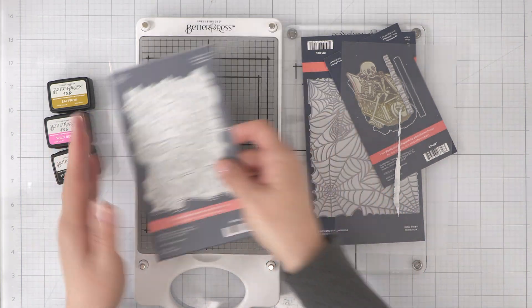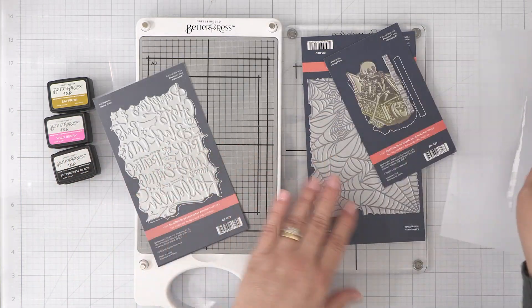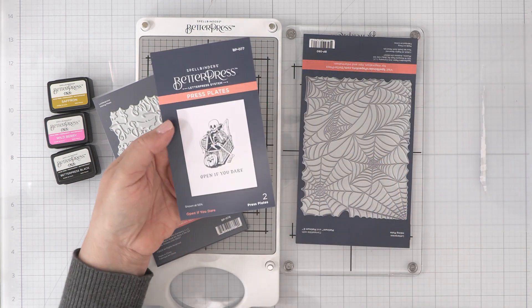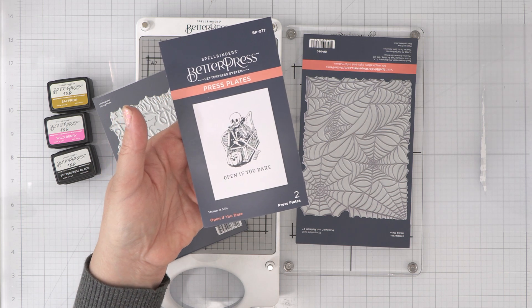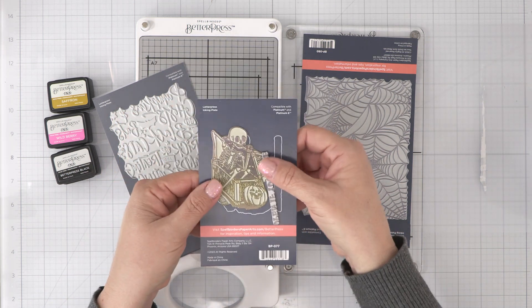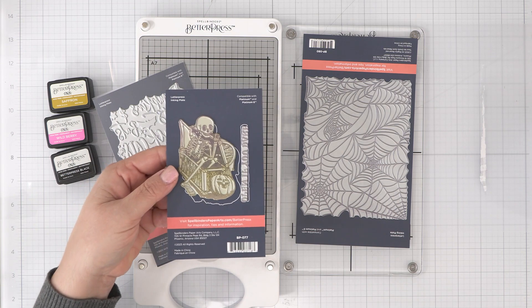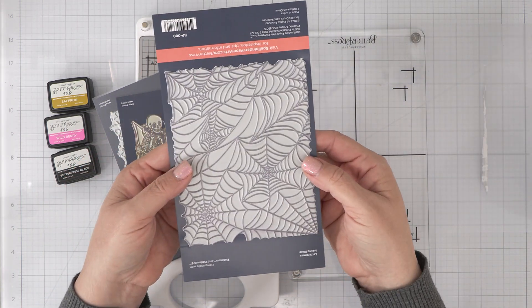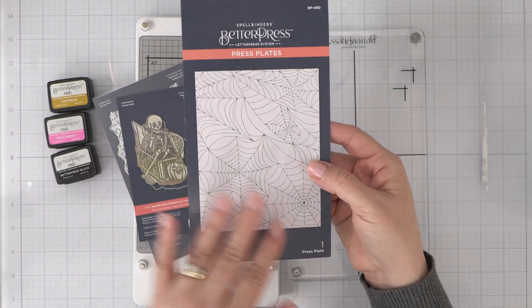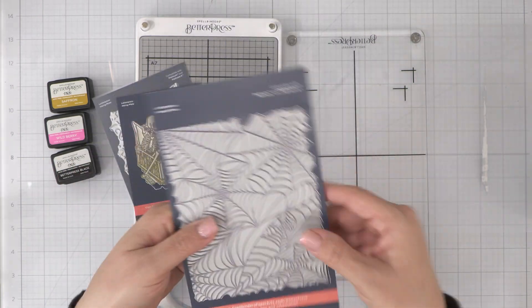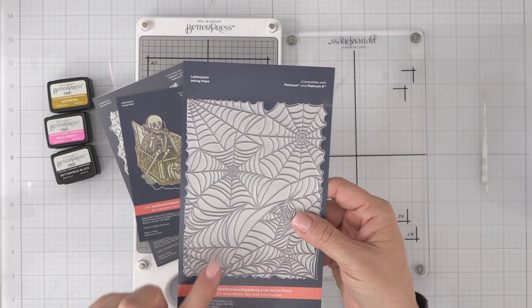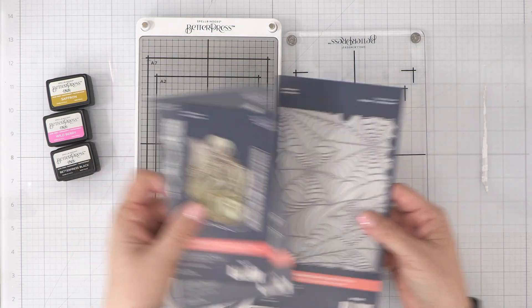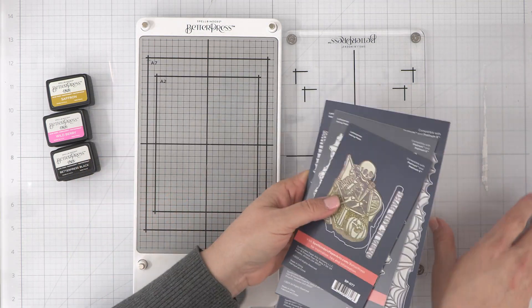Next up we have Open If You Dare. Now I don't want you to shy away from this guy. He is super cool. I can't wait to share with you the samples I have for him. And then last we have the Spiderwebs. This is a large cover plate that covers an A2 completely.